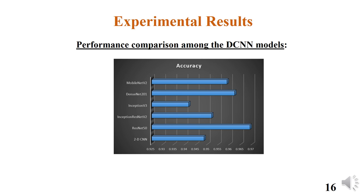This bar chart shows the accuracy comparison among the neural networks implemented in this study. As mentioned earlier, ResNet-50 outperforms the other models in terms of accuracy, with an accuracy close to 97 percent.